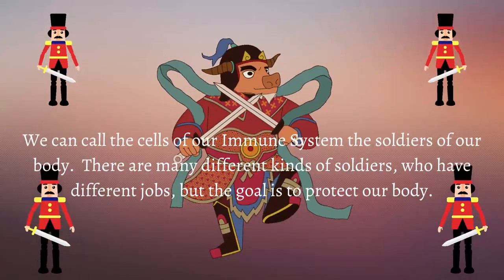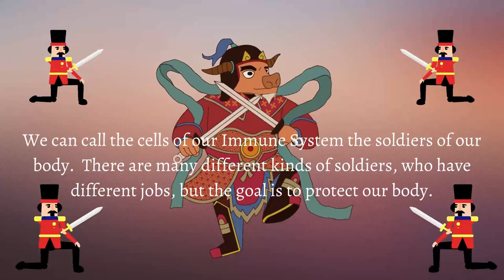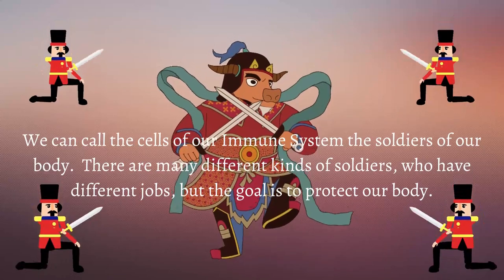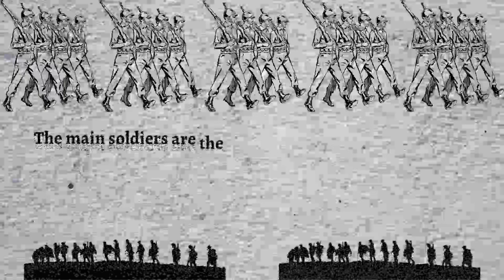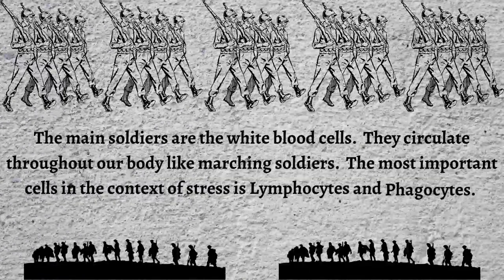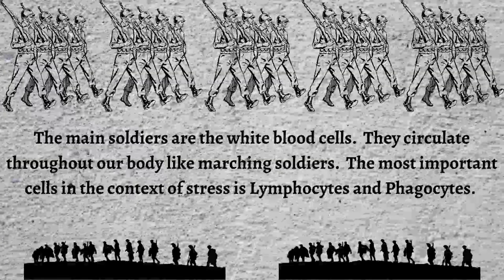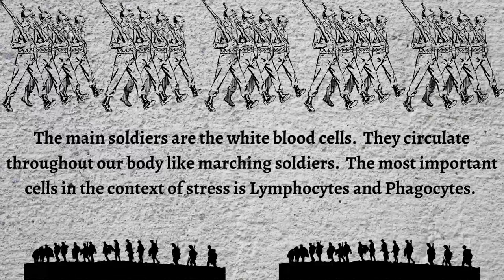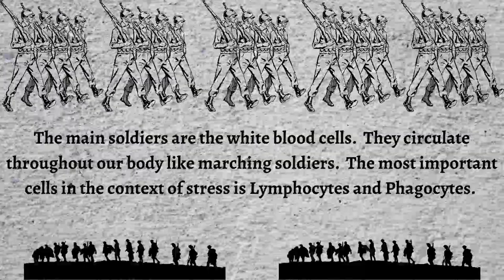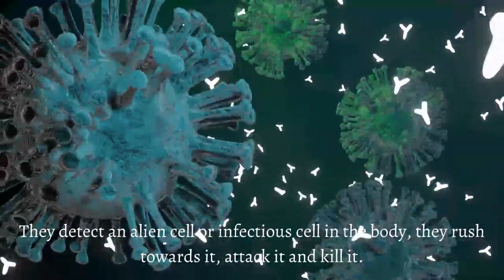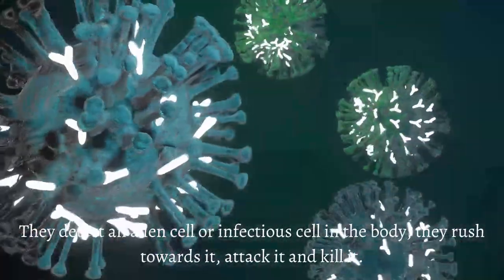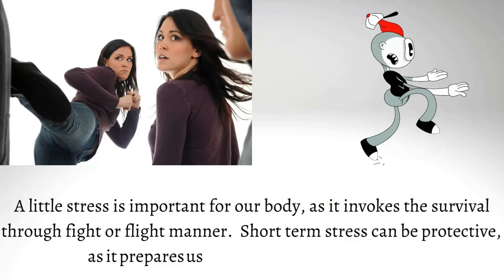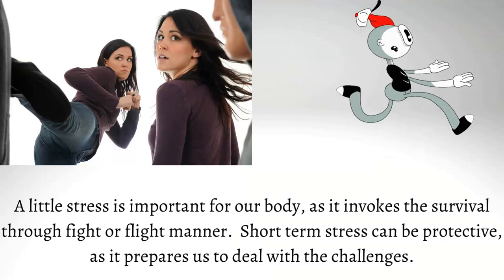We can call the cells of our immune system the soldiers of our body. There are many different kinds of soldiers who have different jobs, but the goal is to protect our body. The main soldiers are the white blood cells. They circulate throughout our body like marching soldiers. The most important cells in the context of stress are lymphocytes and phagocytes. They detect an alien cell or infectious cell in the body, rush towards it, attack it, and kill it.